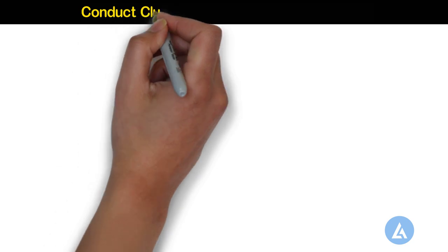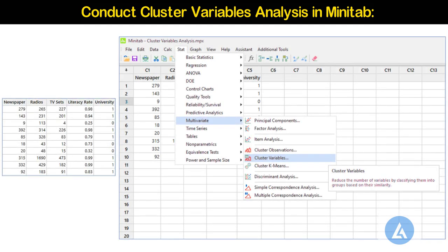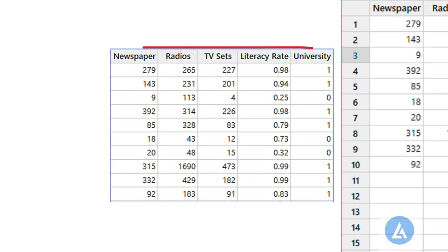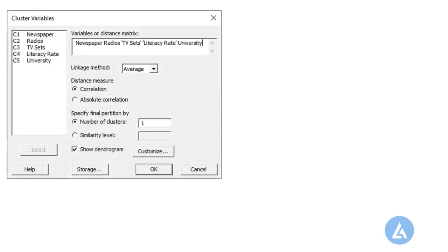Conduct Cluster Variables Analysis in Minitab. To conduct a Cluster Variables Analysis in Minitab, please follow the steps. Enter or copy the data to the Minitab worksheet as shown in the picture. Select Stat, Multivariate, and then Cluster Variables. In Variables or Distance Matrix, enter Newspaper, Radios, TV Sets, Literacy Rate, and University.